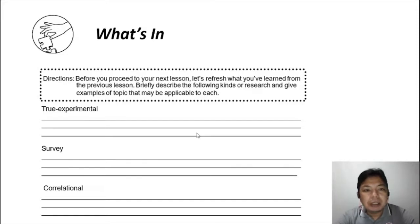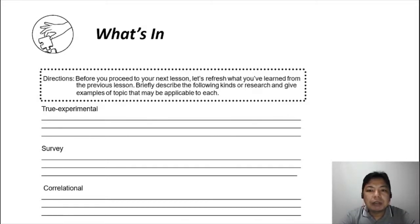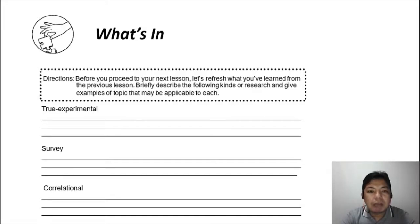For the third pre-activity, the directions say: before you proceed to your next lesson, let's refresh what you've learned from the previous lesson. Briefly describe the following kinds of research and give examples of topics applicable to each. We've already discussed the three types of quantitative research: experimental, survey, and correlational. Give a brief description for each and an applicable example topic. Write your answer on a separate sheet of paper, pause the video, and continue when done.